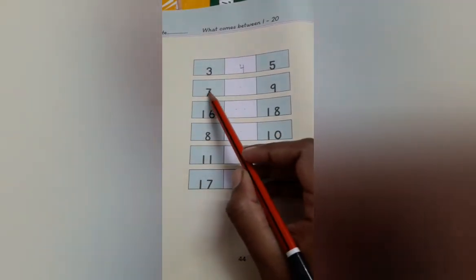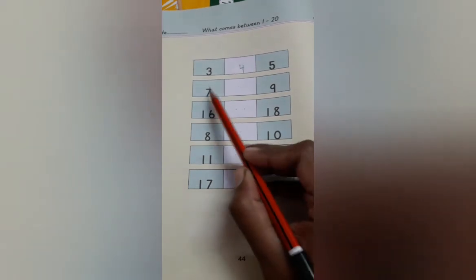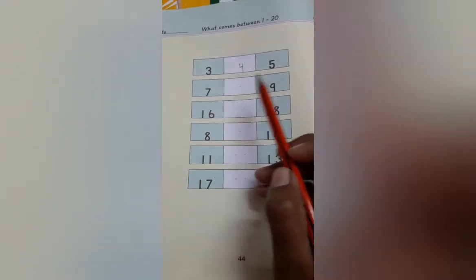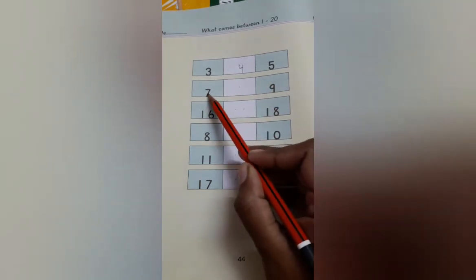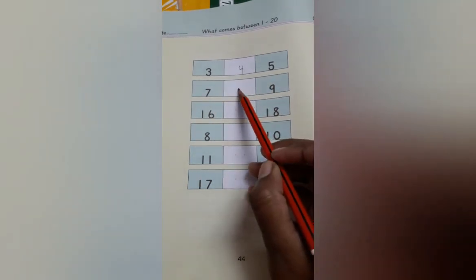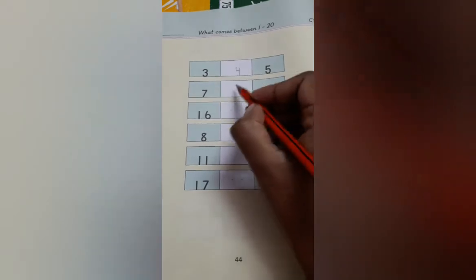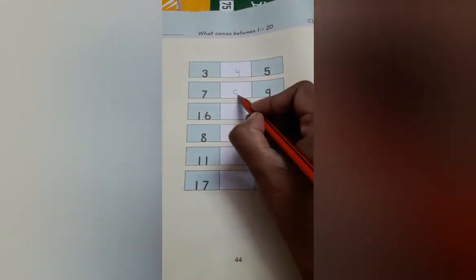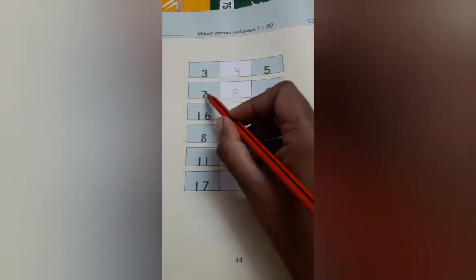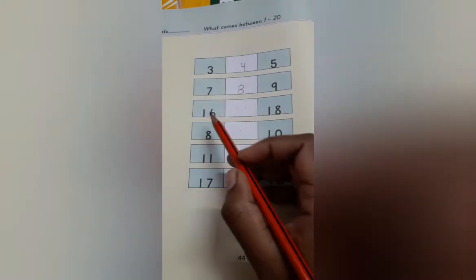Yes. Now read this number: 7. One number is missing here. And this number is 9. Yes. What comes between? Yes, number 8. Yes, 7, 8, 9.